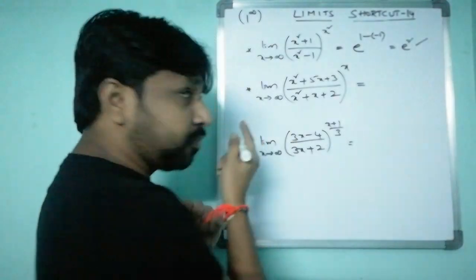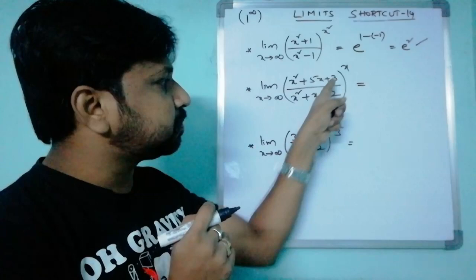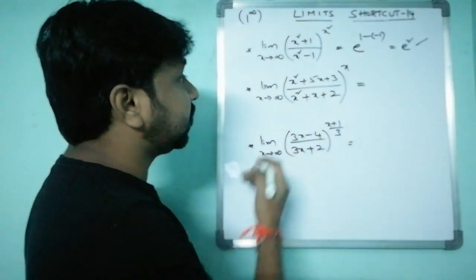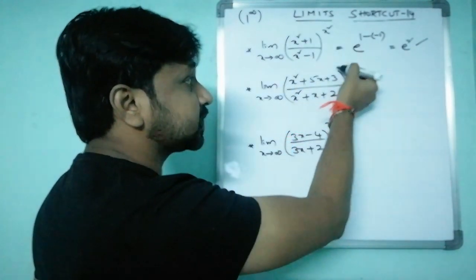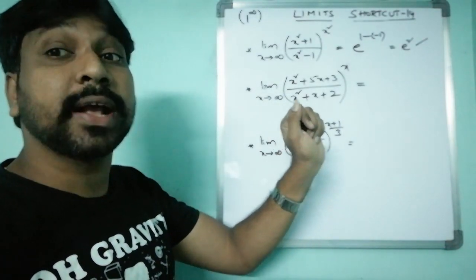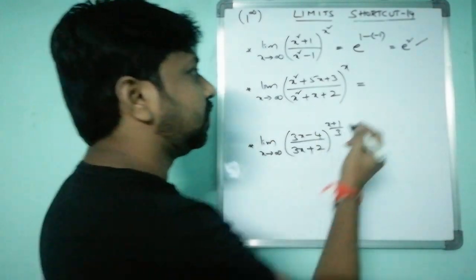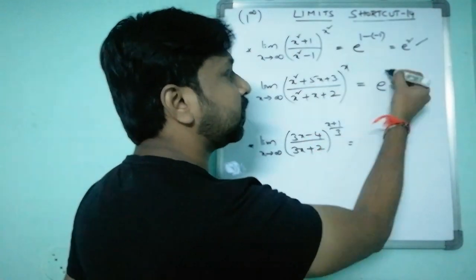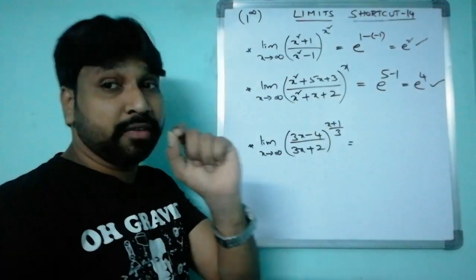Now a very important problem: limit x→∞ of (x²+5x+3)/(x²+x+2) whole power x. Here both numerator and denominator are x² combinations but the power is just x. Whenever the power is x, you take the difference of the x-coefficients. The x-coefficient in the numerator is 5 and in the denominator is 1, so 5−1 = 4. The answer is e^4.